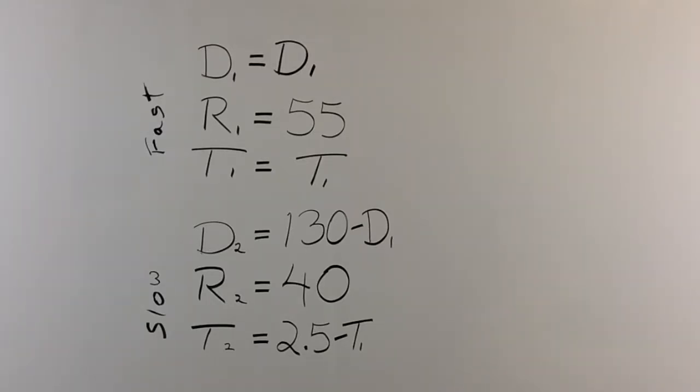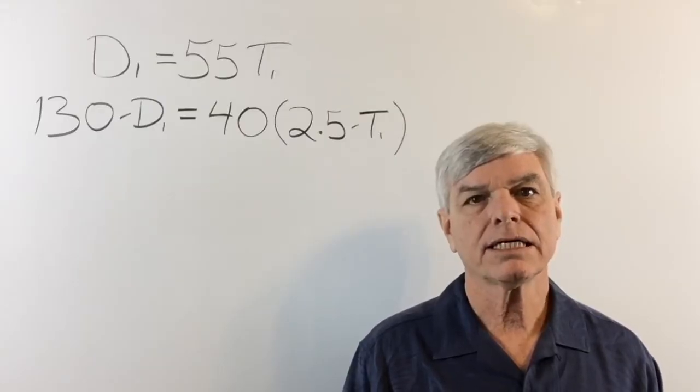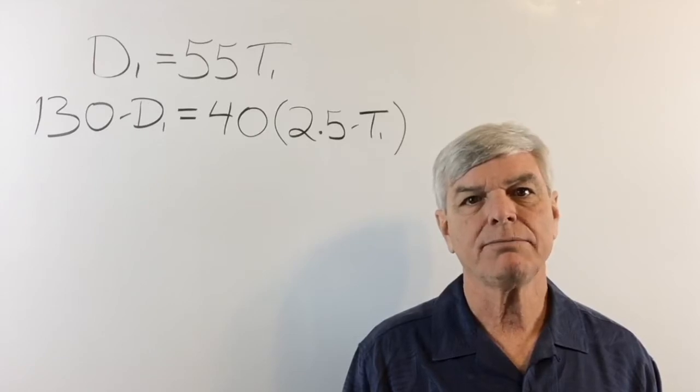And for the second body in motion D2 equals 130 minus D1. So it's going to be parenthesis 130 minus D1 equals 40 times parenthesis 2 and a half minus T1 close parenthesis.